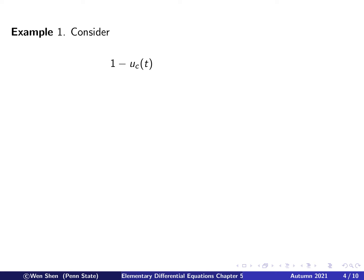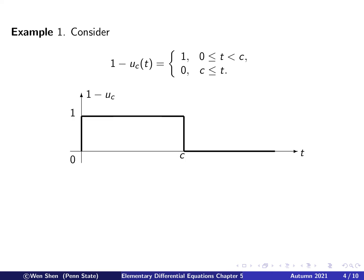Let's take a few examples. Consider the function 1 minus u_c(t). Since u_c has a jump at t equal to c, we consider two intervals. When t is less than c, u_c is zero, so one minus zero gives one. When t is greater than c, u_c is one, so one minus one gives zero. We can graph this: it will be one on the interval from zero to c, and then at c it has a downward jump of one unit, then remains zero.